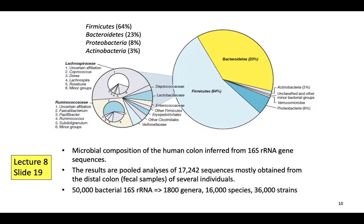Another slide is also from lecture 8, slide number 19. This slide shows the different organisms present in the human colon. The most common bacterial group found in the colon is Firmicutes, at about 64%. The second most common type is Bacteroidetes, shown in yellow.